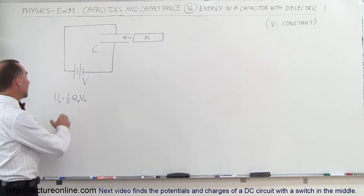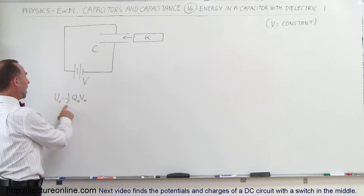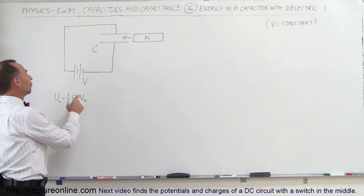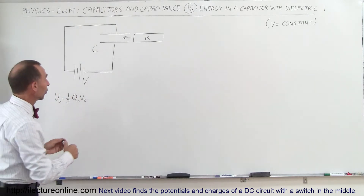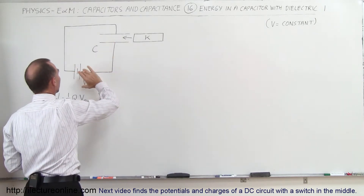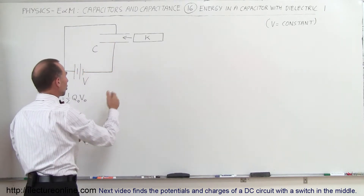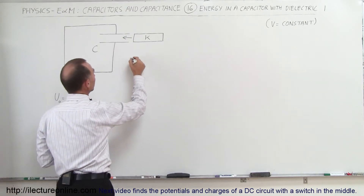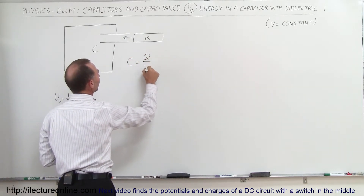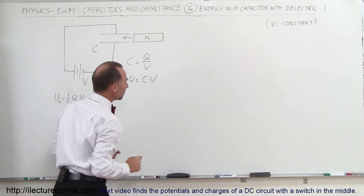Remember that the energy in a capacitor, when there's just air between the capacitor plates, is one-half the charge across the capacitor times the voltage across the capacitor. Since we have a battery connected to the capacitor, the voltage across the capacitor will be V, and the charge can be calculated using C equals Q divided by V, so Q equals C times V.